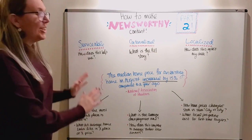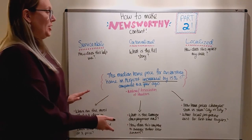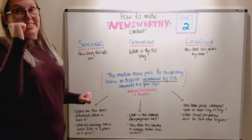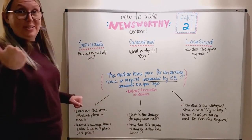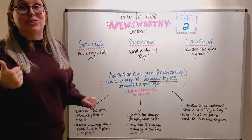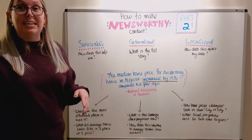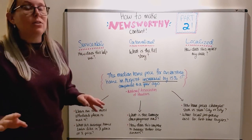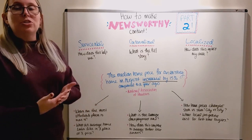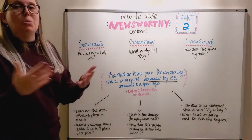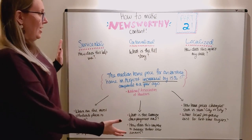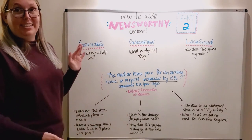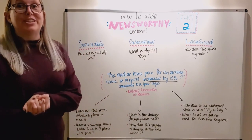So consider these as potential angles to brainstorm when you're coming up with content ideas. Also consider what I talked about last time: data. If you can use original data in your story, or take existing data and draw new conclusions and tell new stories with it, that's gold. Emotion — does it have an emotional impact? And impact — meaning how many people does it affect? All of these things are great lenses to come up with fantastic newsworthy content.